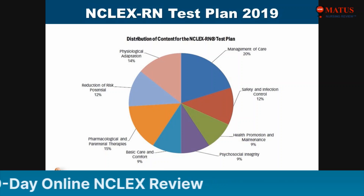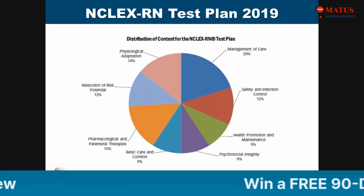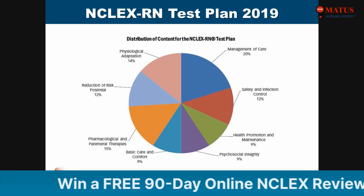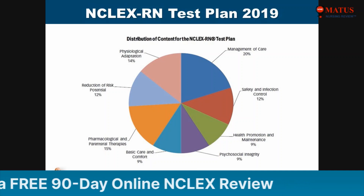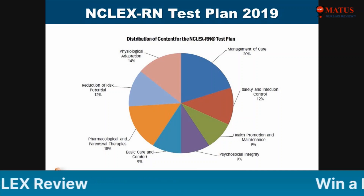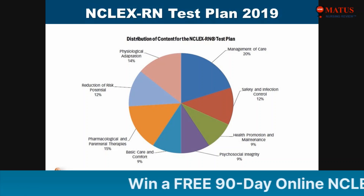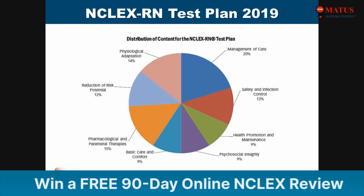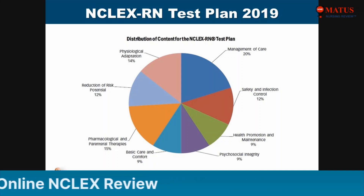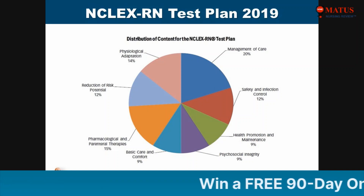Part of that 20% will be leadership and management and management and supervision of care. The next one is also physiological adaptation, and safety and infection control is 12% of your NCLEX exam. Then you also have pharmacology, which is somewhere under 15%. Take note of the test plan — management of care is a big bulk in your NCLEX examination.